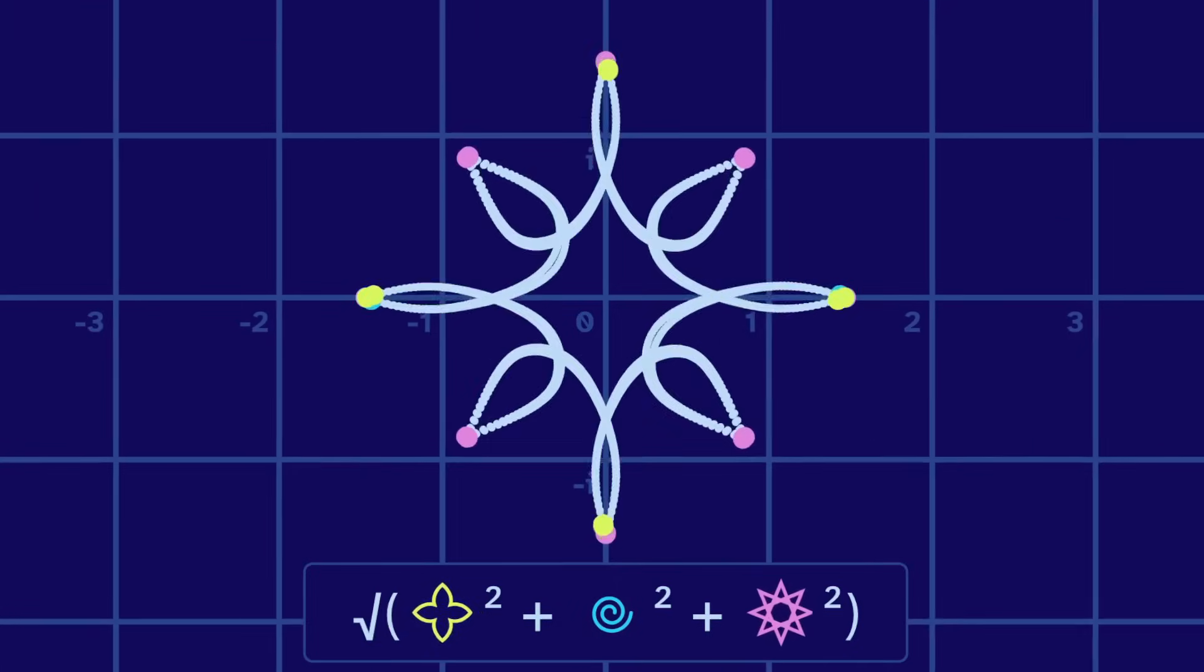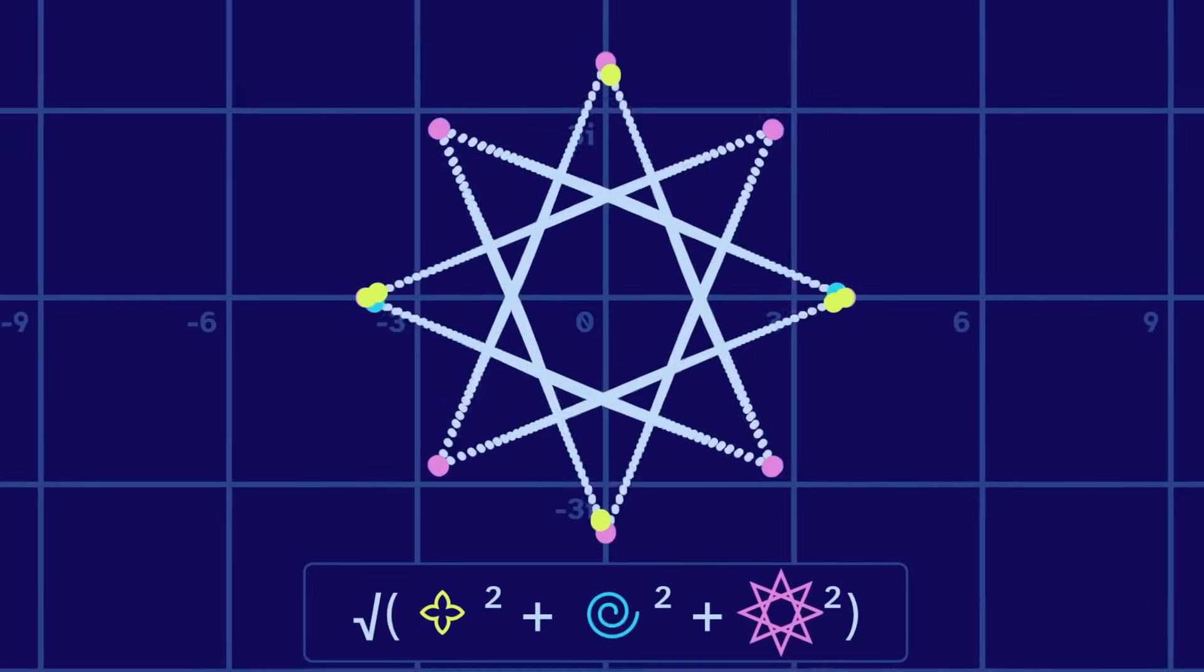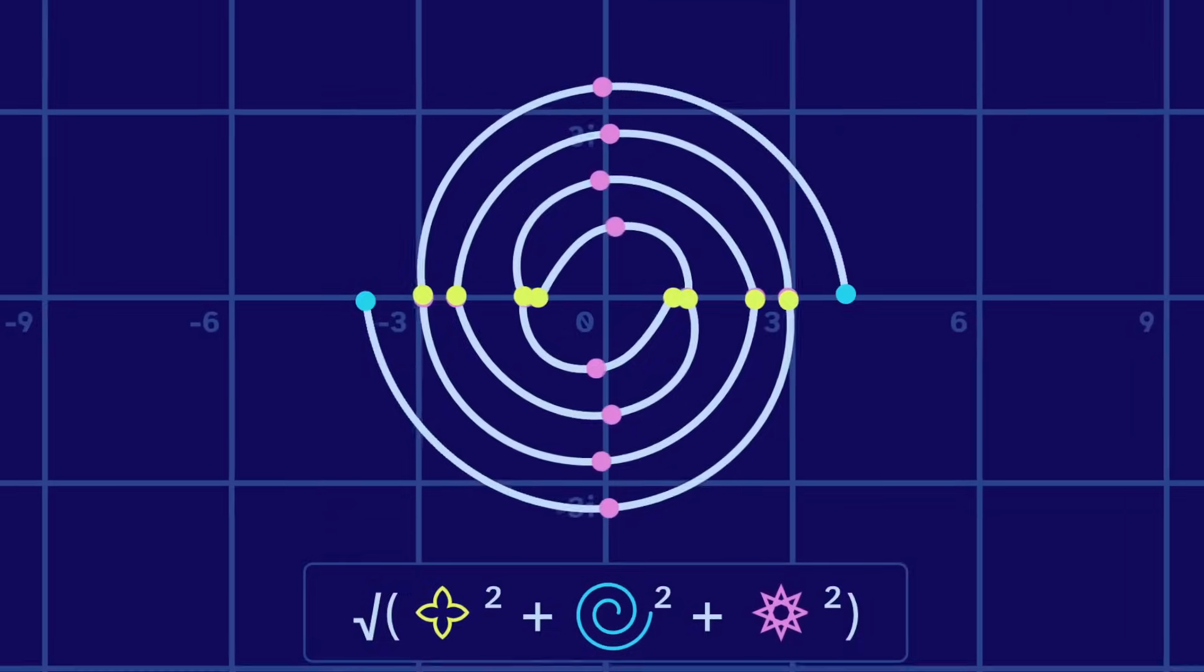And change their sizes at different speeds. Here, the flower is largest. But then the star takes over. And then the spiral. And we repeat.